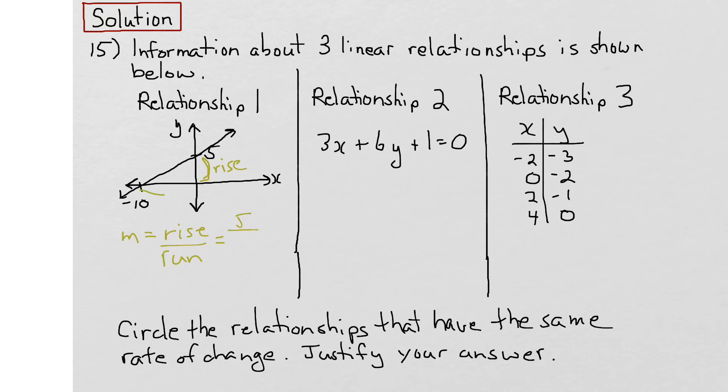And the run, from here to here, is 10 units also in the positive direction. Don't be confused by this negative 10. We still have to get from this point to this point going 10 units in the positive x direction. We can simplify this. 5 goes into the top once and into the bottom twice, so we end up with a slope of positive 1 half.